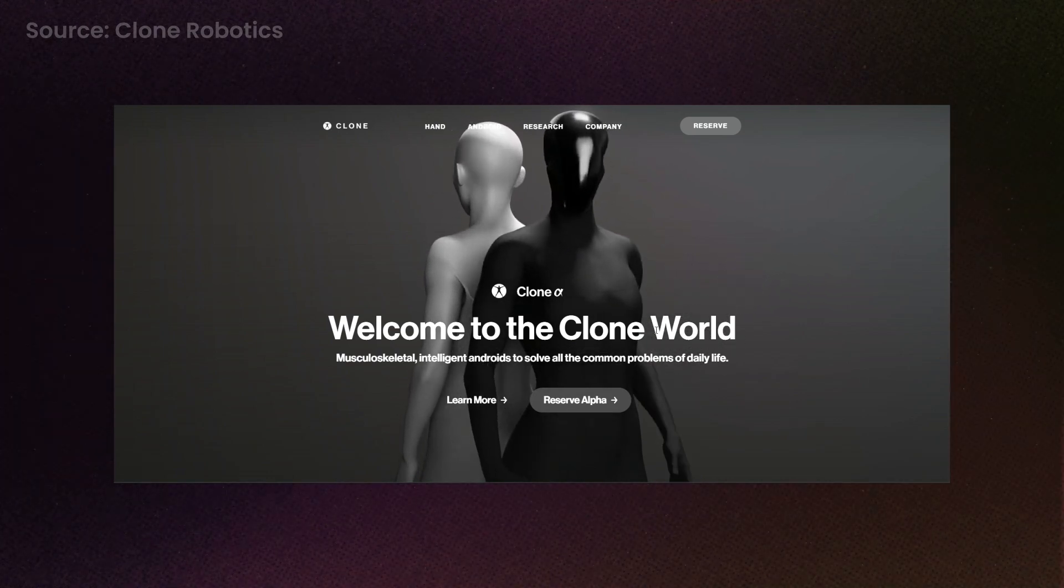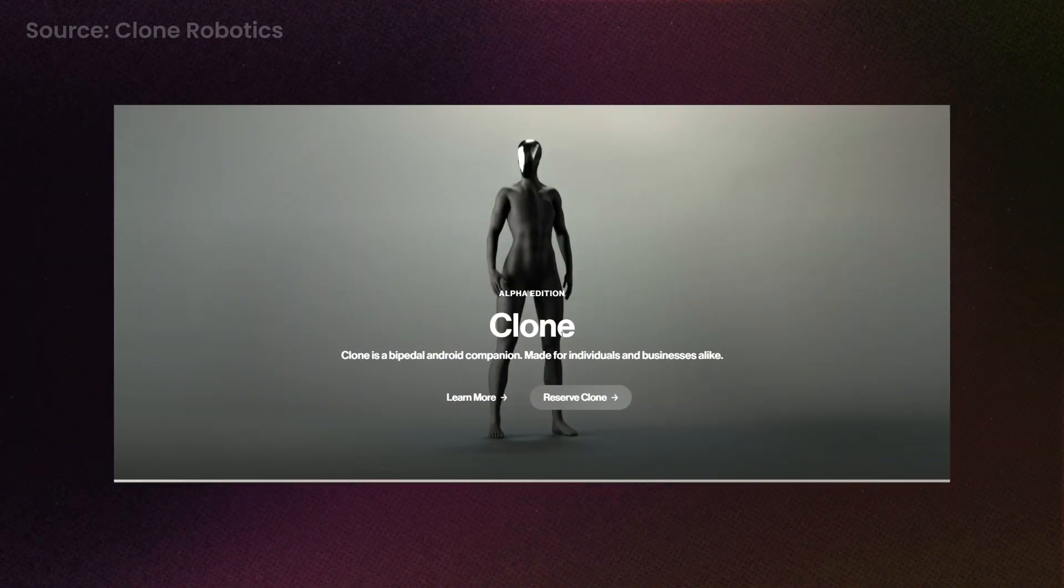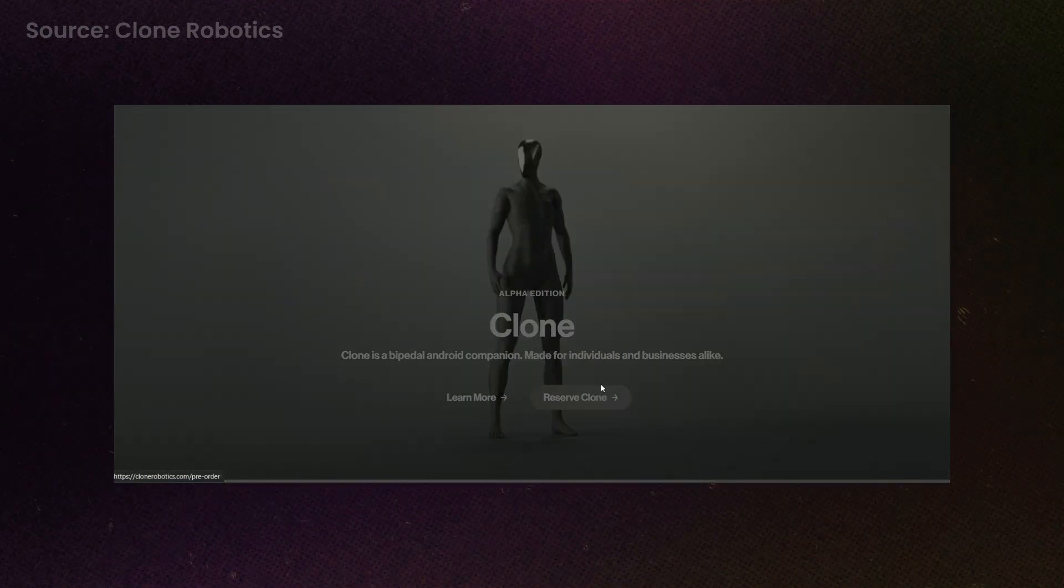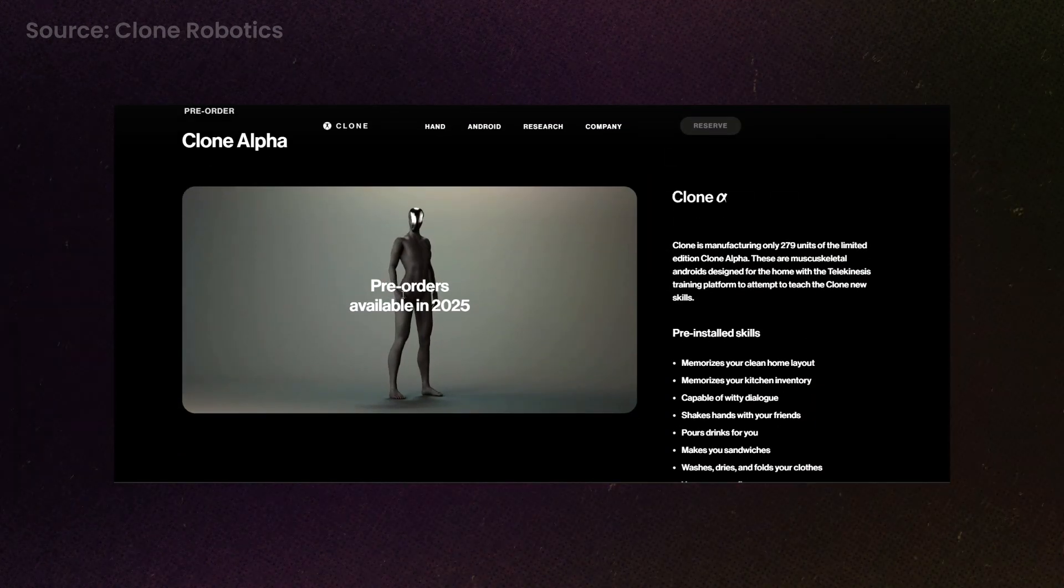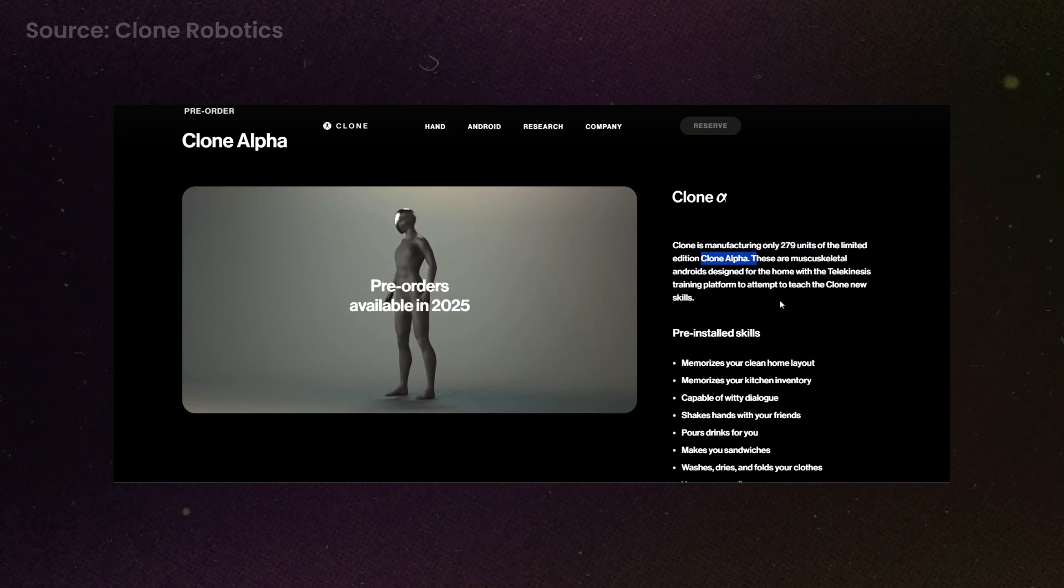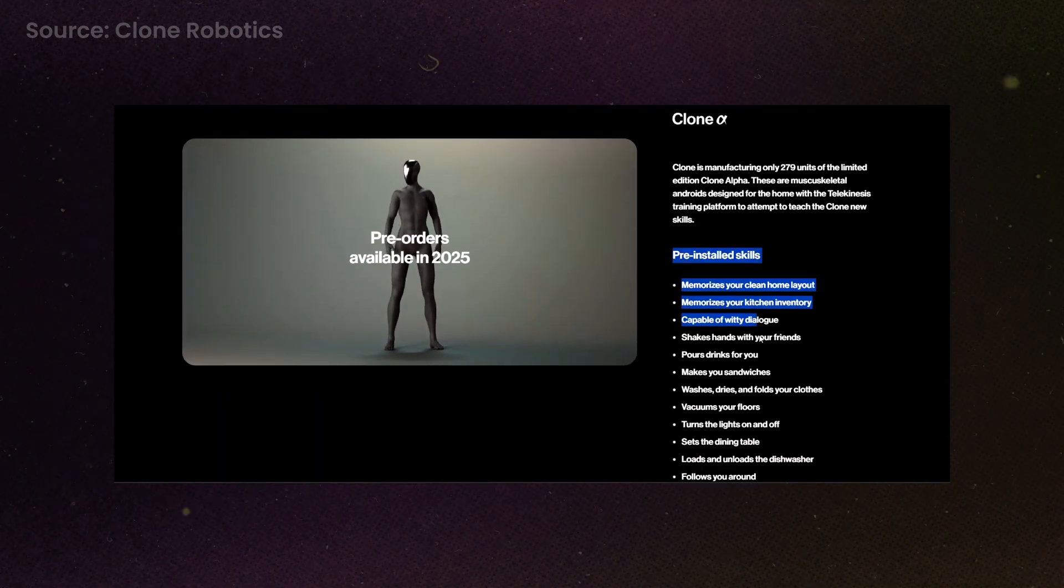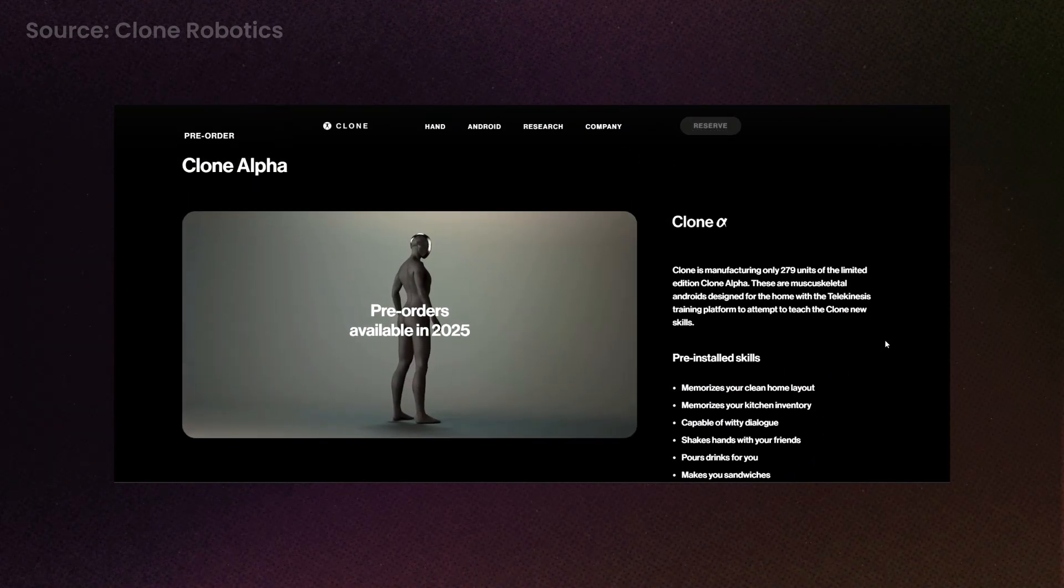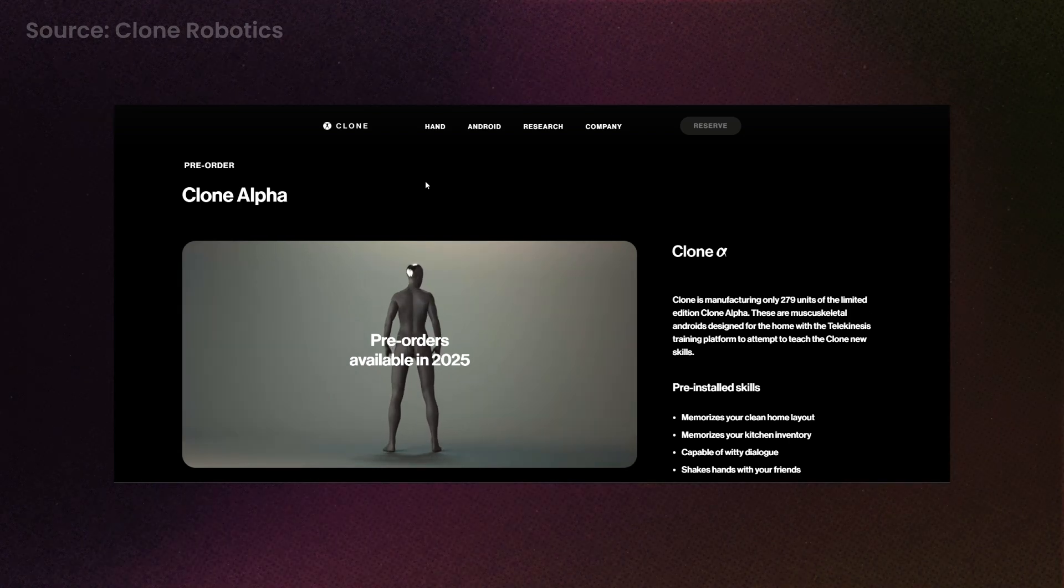And the really cool thing is that Clone is actually preparing to ship out these robots, and as you can see here, you can reserve your own clone in 2025. So it says here they are only building 279 units of their limited edition Clone Alpha, and it can do all of these things listed here, which is honestly kind of crazy to think that these robots are going to be literally in people's homes very soon.